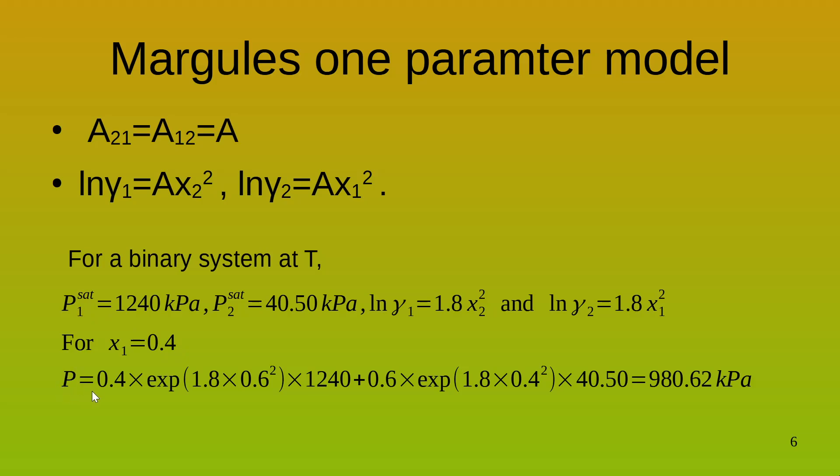Now, the pressure is going to be 0.4 into exponential 1.8 x2 squared, well, gamma 1 will be exponential 1.8 x2 squared into 1240 which is the saturation vapor pressure of 1 plus 0.6 into exponential 1.8 into 0.4 the whole squared which is x1 into 40.50. This will be 980.62. Therefore, the boiling pressure at the temperature T for this particular system will be 980.62 kPa.